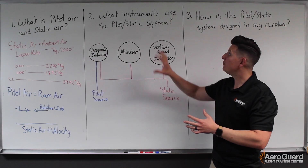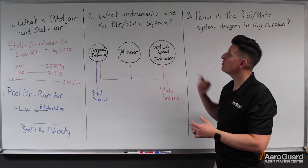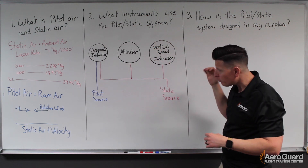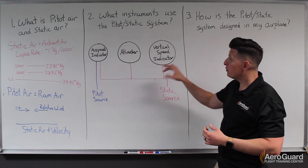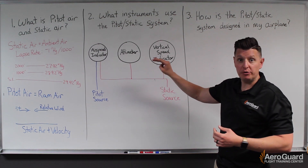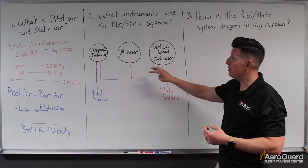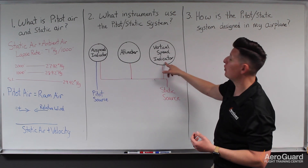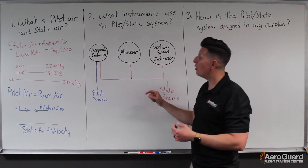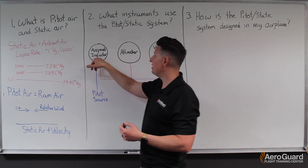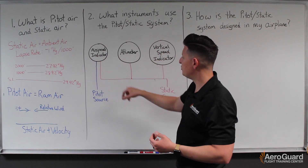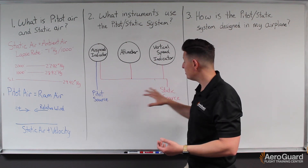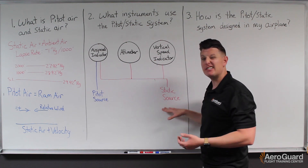Now we'll move on to question number two: which instruments use the pitot-static system? There are three flight instruments that use this system — the airspeed indicator, the altimeter, and the vertical speed indicator. Starting with the airspeed indicator, it uses both the pitot source and the static source.